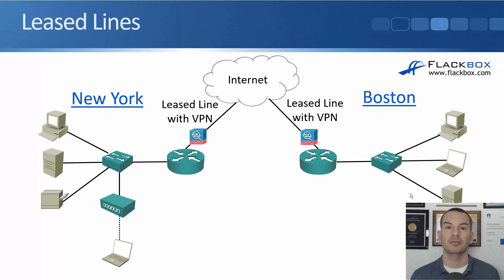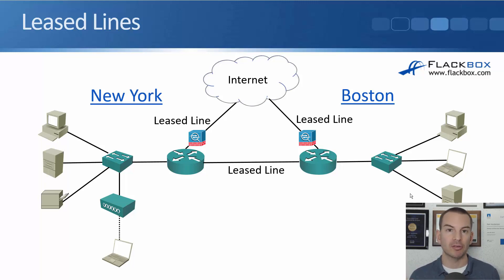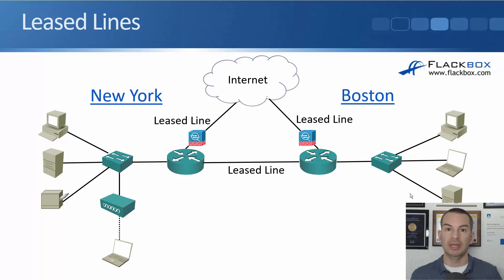Some other topology options: we could put a leased line going to the internet in New York and also one in Boston, giving us internet connectivity from both sites. Then we could configure a VPN tunnel over the internet for connectivity between both sites as well — using the same leased lines for both internet and inter-office connectivity. Alternatively, we could add a direct leased line between New York and Boston on top of that, which is more expensive, but ensures corporate traffic doesn't go over an internet VPN. That way, we get an SLA with guaranteed uptime, delay, and loss — which we wouldn't get sending traffic over the internet.